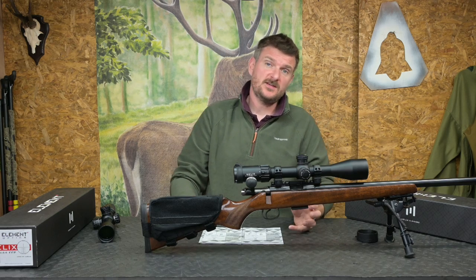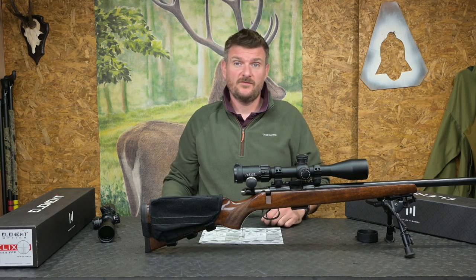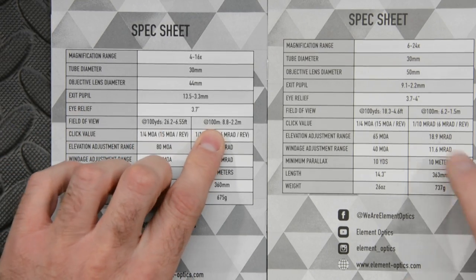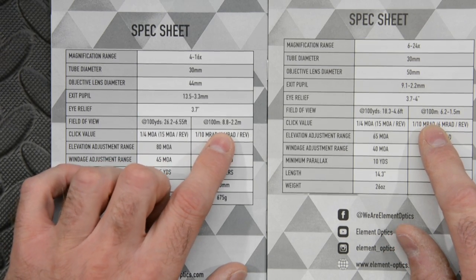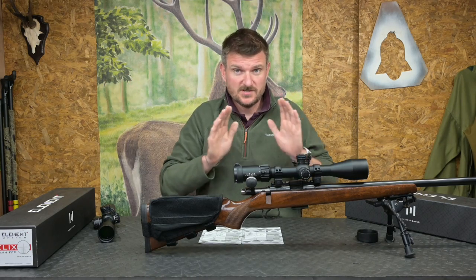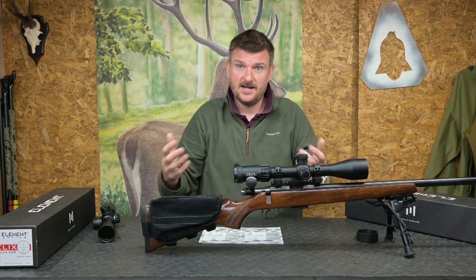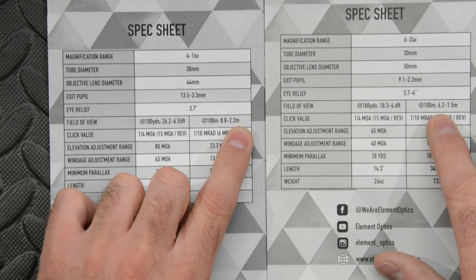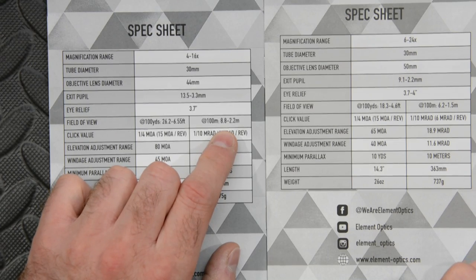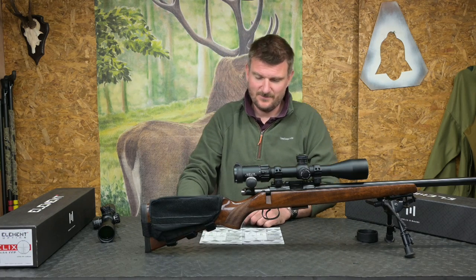Another factor to look at is the field of view, which is especially important for hunting. On a zoom scope it does vary. On the 4-16, going metric: the field of view goes from 8.8 to 2.2 meters — that's 2.2 to 8.8 meters wide visible at 100 meters, and it's a cone shape, so at 1000 meters it would be 10 times as much. Compare that with 6.2 to 1.5 on the other scope. On the 4-16, 8.8 divided by 4 — the zoom ratio — equals 2.2. Quite simple.